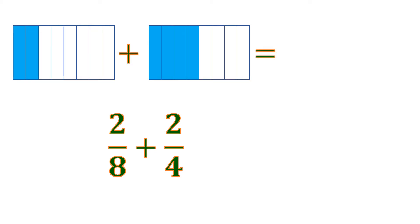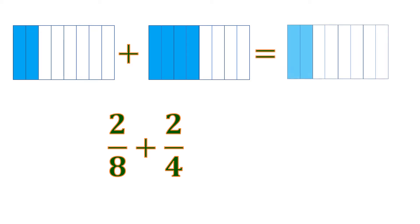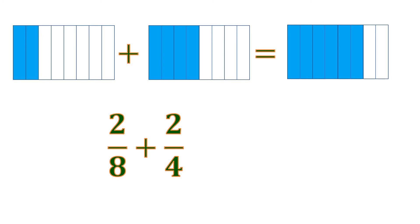Let us combine starting from 2 eighths, or 2 shaded parts out of 8. Then we add the 4 shaded parts, and it becomes 6 eighths, or 6 shaded parts out of 8. The sum of 2 eighths and 2 fourths is 6 eighths.